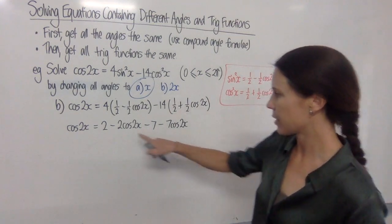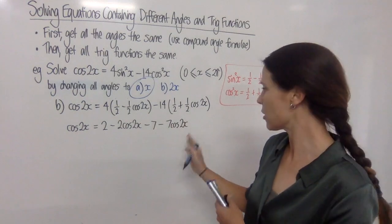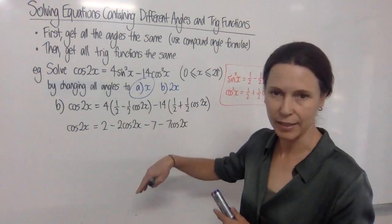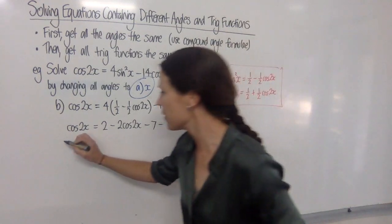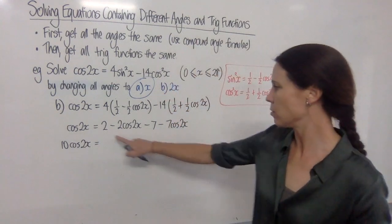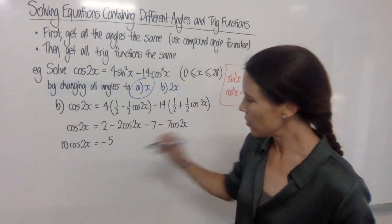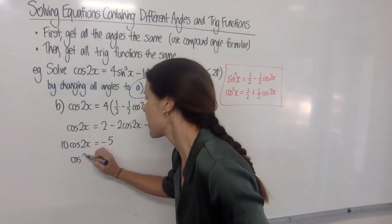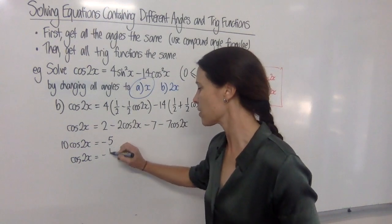So gathering things together, I can see I've got minus 2, minus 7, I've got minus 9 cos 2x here. So if I add 9 cos 2x to each side, there's already one of them over here, plus another 9, I'm going to have 10 cos 2x. And that's going to equal 2 minus 7, which is minus 5. So now to divide both sides by that 10 there to get rid of it, I've got negative 5 over 10, so that's minus a half.